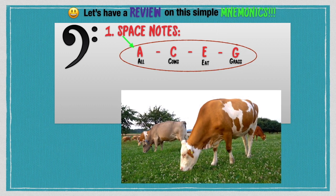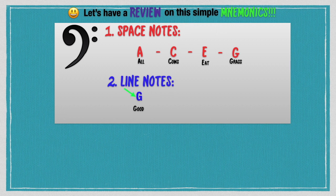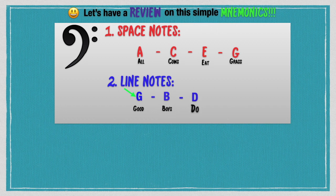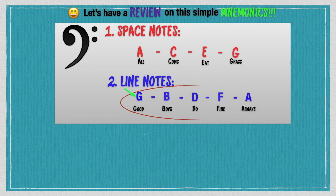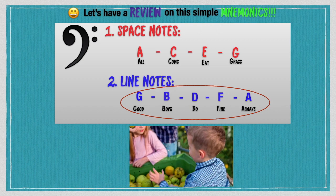And the line notes of your bass clef staffs are G stands for good, B stands for boys, D stands for do, F stands for fine, and A stands for always. Good boys do fine always.